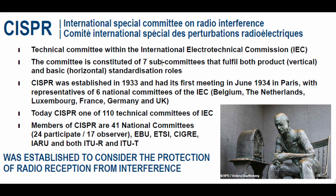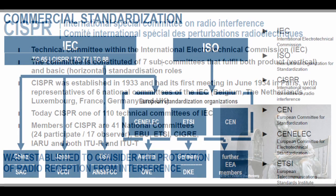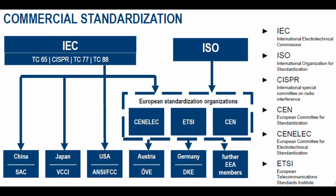CISPR was established to consider the protection of radio reception from interference. Every country has their own standardization. Here we will understand how it is segregated using a commercial standardization flow graph. In that you can observe IEC and ISO are two different organizations but they are working together.